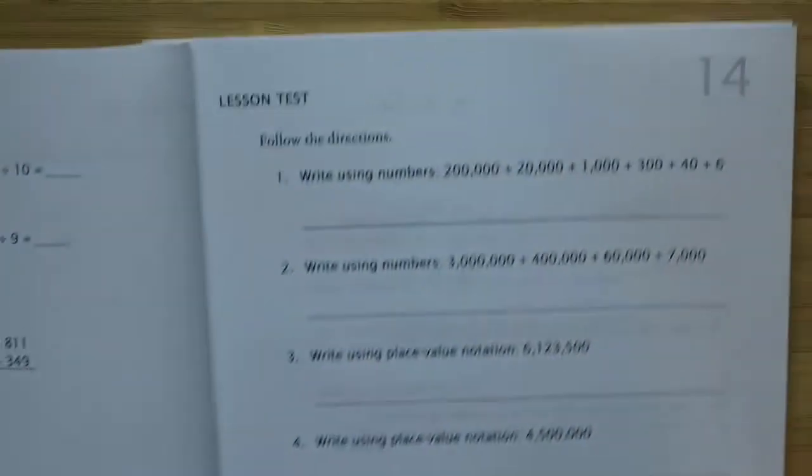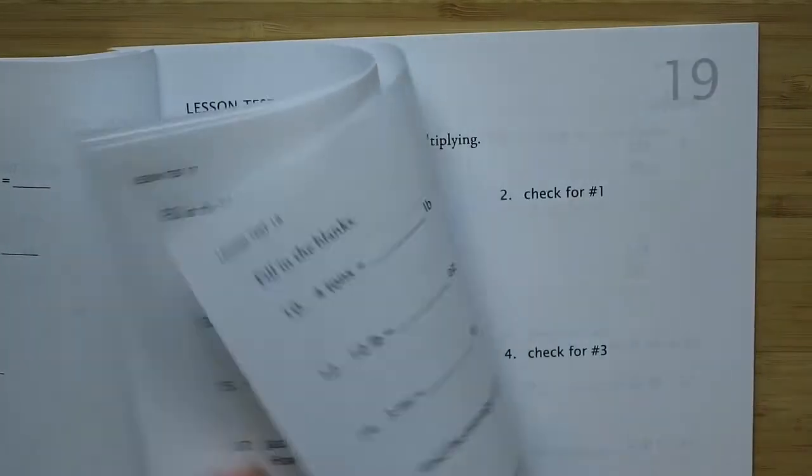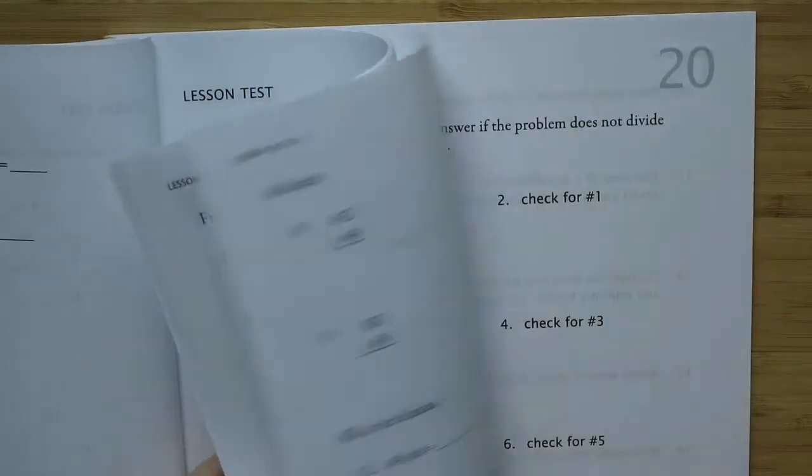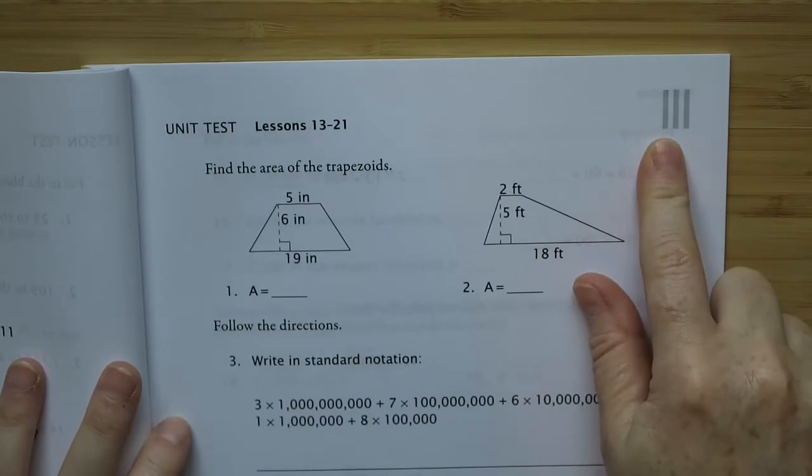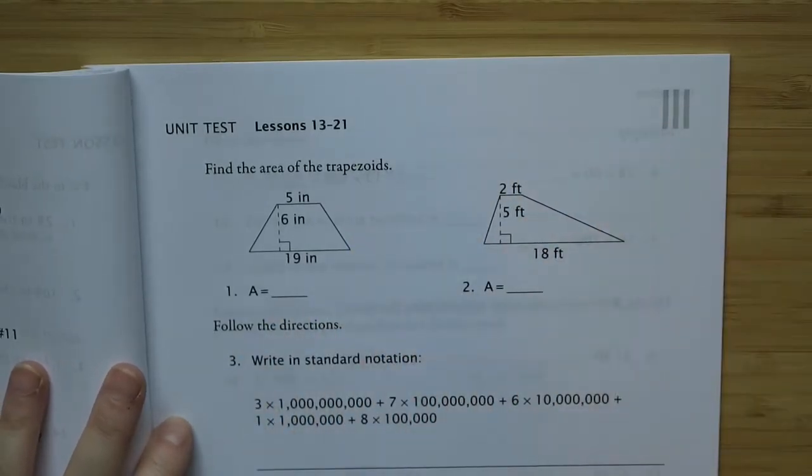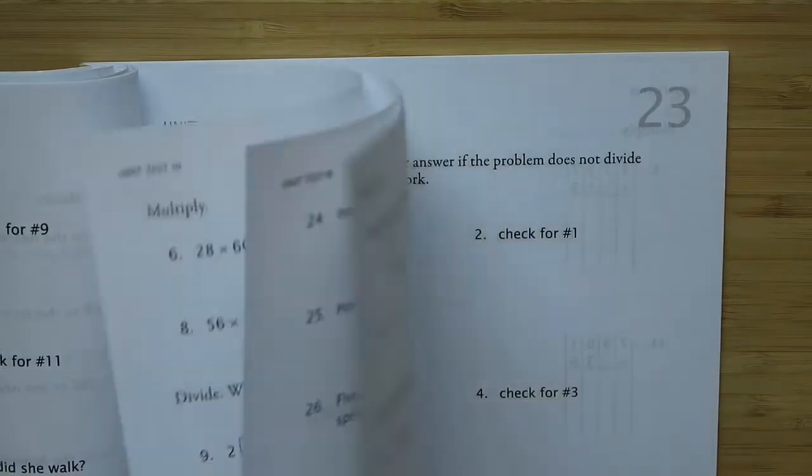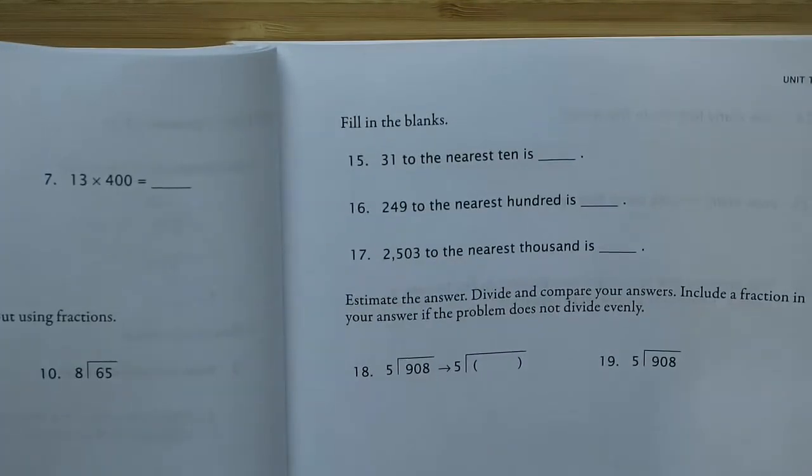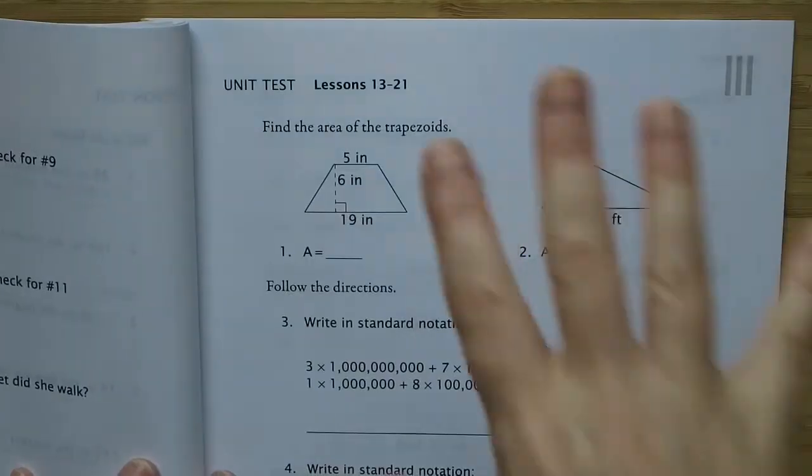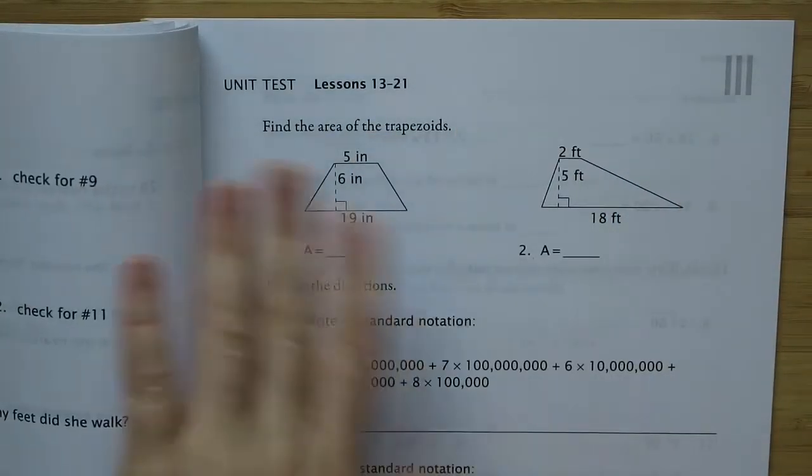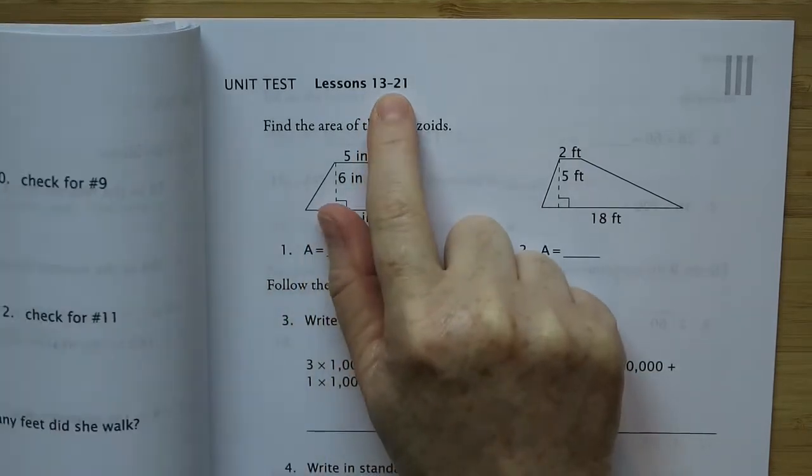And then after every six tests there is a unit test, which encompasses a much larger section. It's usually two pages. This one is 26 problems. So it's a much more comprehensive unit test over a larger chunk of lessons.